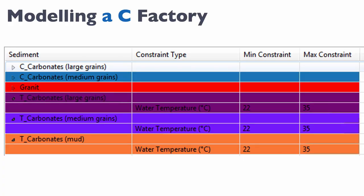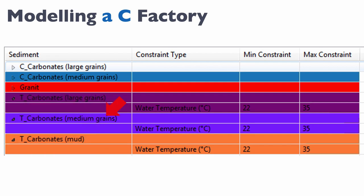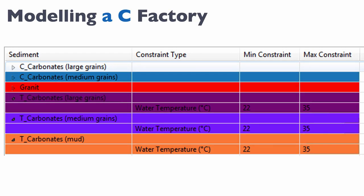We're going to look at a number of different sediments. We'll have C carbonate producers that will be large grain and medium grain, and we'll have a basement — that's granite, not a sediment. Then we'll have T carbonate producers: large grain, medium grain, and mud. For the C factory, I will determine there is no temperature control on formation of the C factory organisms — a reasonable assumption since C factory organisms are relatively insensitive to water temperature. For the T factory, I'll put a constraint: T factory production only starts at 22°C and stops at 35°C.